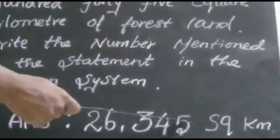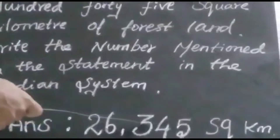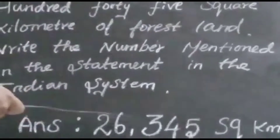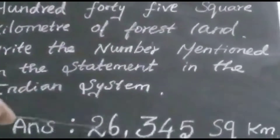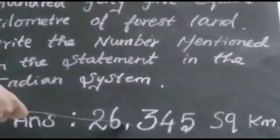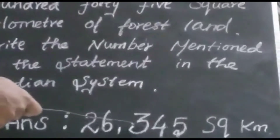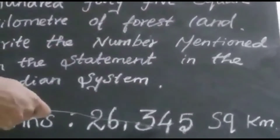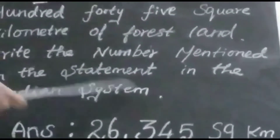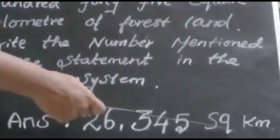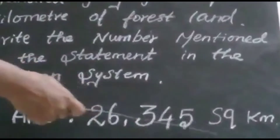The place values are 1, 10, 100, 1000, 10,000. So the answer is 26,345 square kilometers.